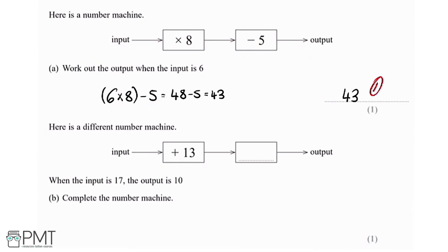For part B, we've got a different number machine. We've got some input, we add 13, we're not sure what this operation is, and then we've got some output. We're told that when the input is 17, the output is 10, and we need to complete the number machine.